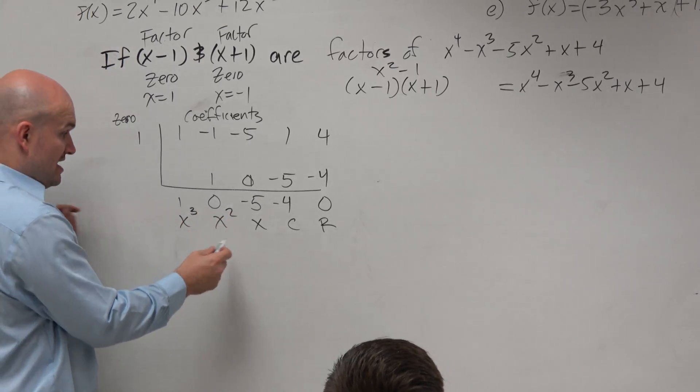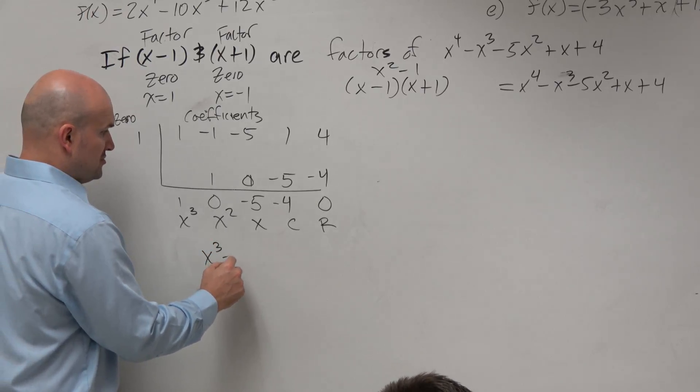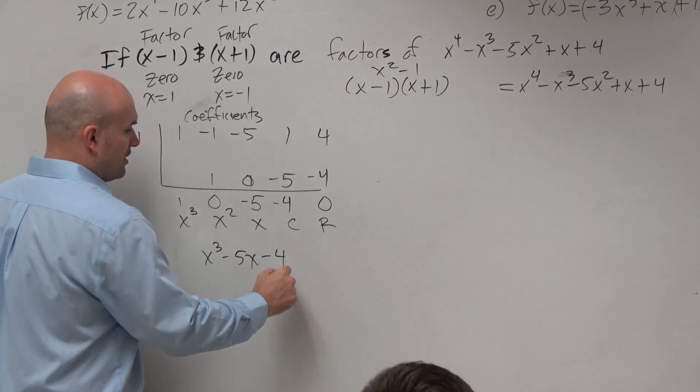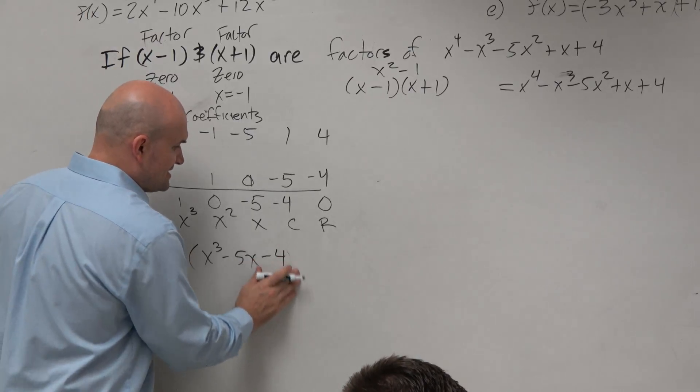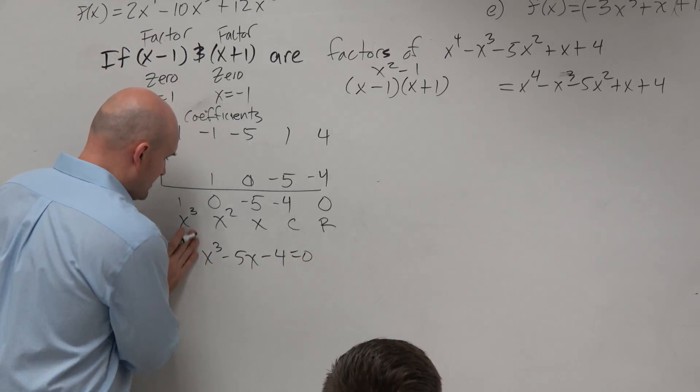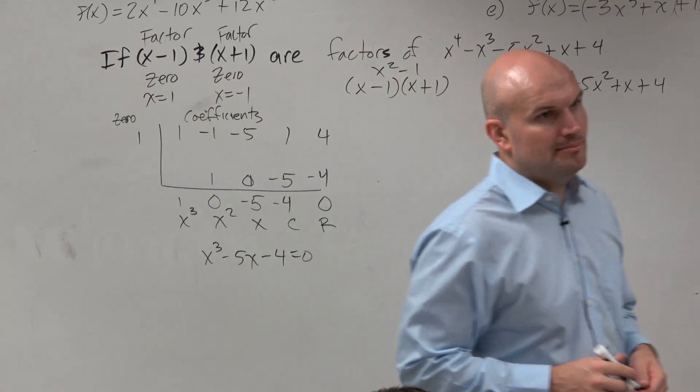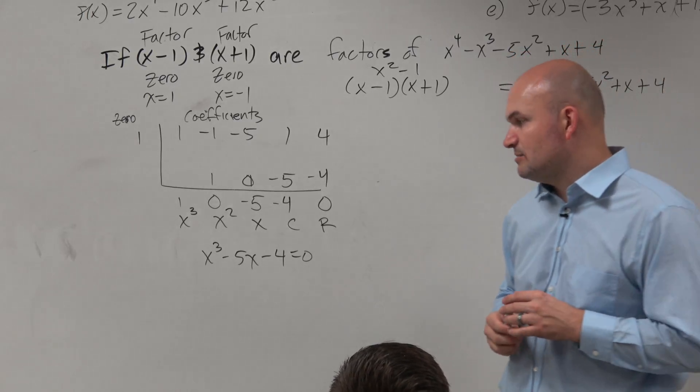Now, this is also a factor, right? x cubed minus 5x minus 4. That is another factor. So I can set this factor equal to 0. But we have a problem here, because do we have any factoring techniques to be able to solve this?